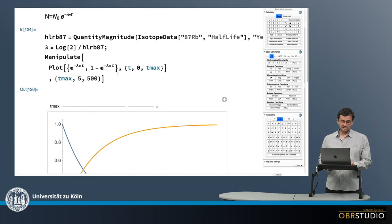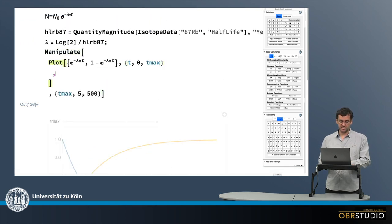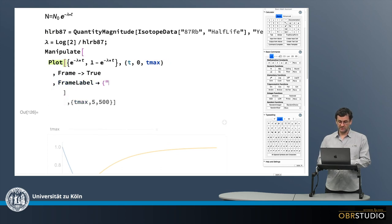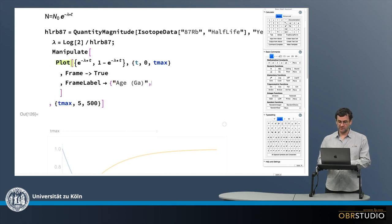And I could make this a little bit more clear like putting on a frame that looks a little nicer and then also label the frame a little bit so I really know what is there. So this would be the age in billions of years for example.